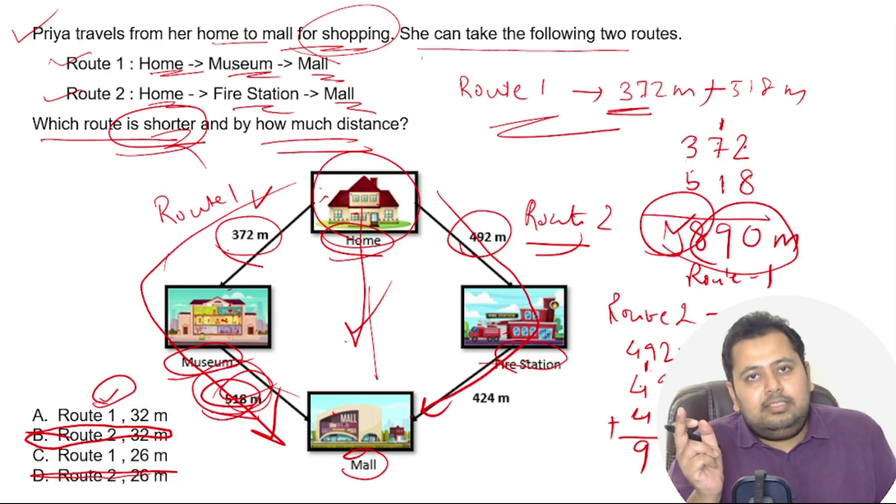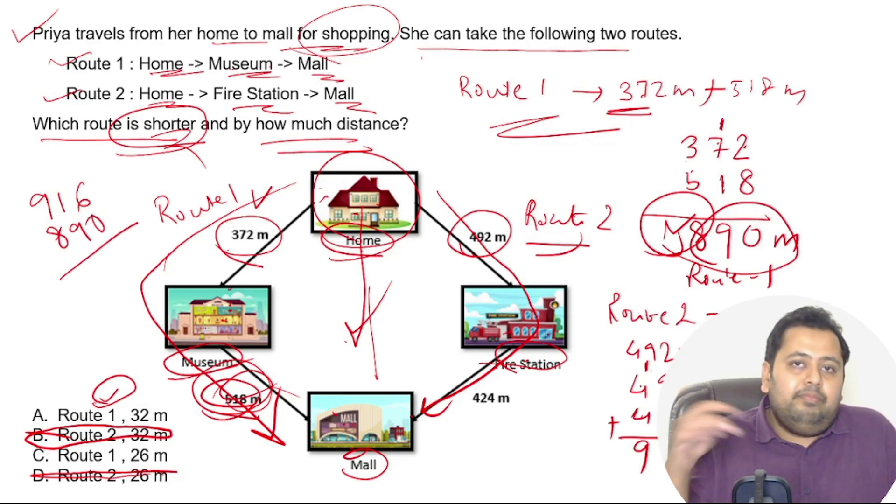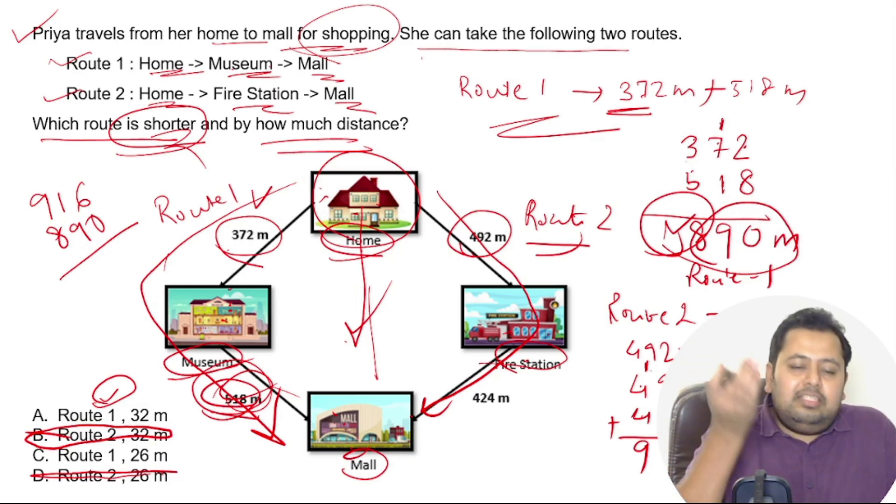It's also asking by how much distance is the shorter distance, or how much distance is route 1 lesser than route 2. This is a subtraction problem. You just have to subtract 890 from 916. 916 being the higher number, you just have to subtract this to find out what is the difference in the distance. 6 minus 0 is 6, and 1 minus 9, so you'll have to carry one over here, so it becomes 11. 11 minus 9 is 2. So your answer is C.